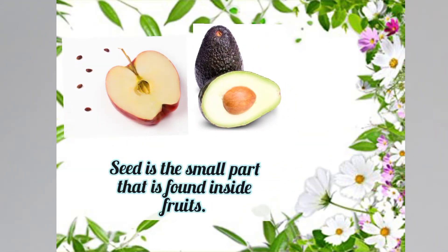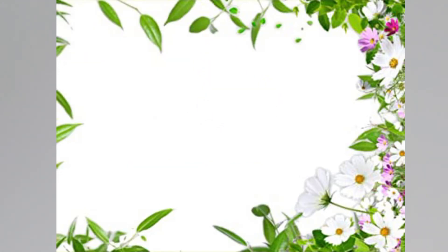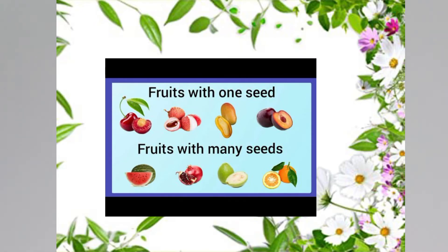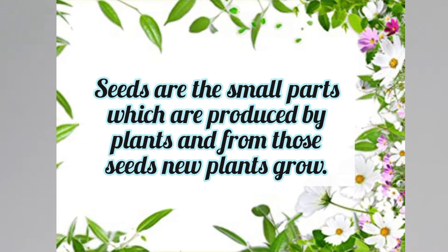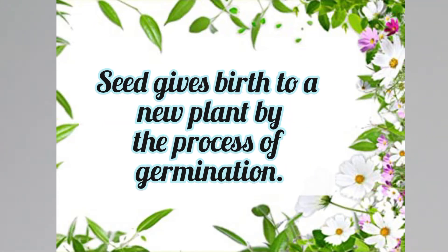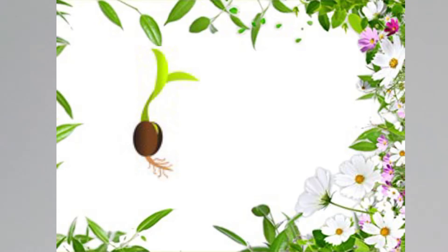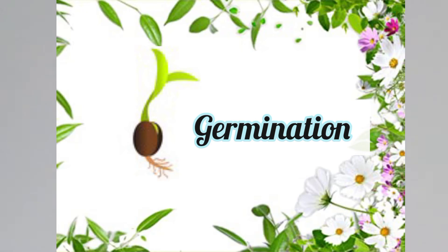A seed is the small part found inside a fruit. It can be a one-seeded fruit or a many-seeded fruit. Seeds are the small parts produced by plants, and from those seeds new plants grow. Seeds give birth to a new plant by the process of germination.